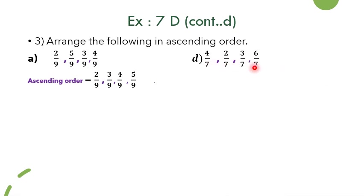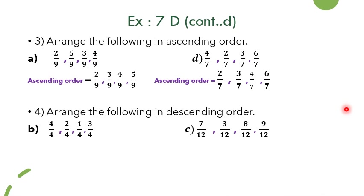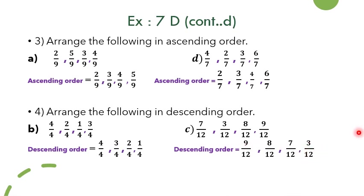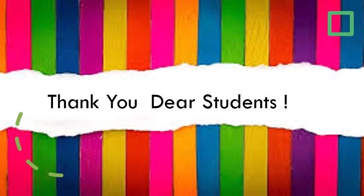Question 4 asks to arrange fractions in descending order. In bit b, descending order from bigger to smaller gives 4 by 4, 3 by 4, 2 by 4, and 1 by 4. In bit c, the descending order is 9 by 12, 8 by 12, 7 by 12, and 3 by 12, from bigger to smaller. With this, we have finished all the topics in today's video lesson. You can always watch the video again to follow the concepts better. Thank you.